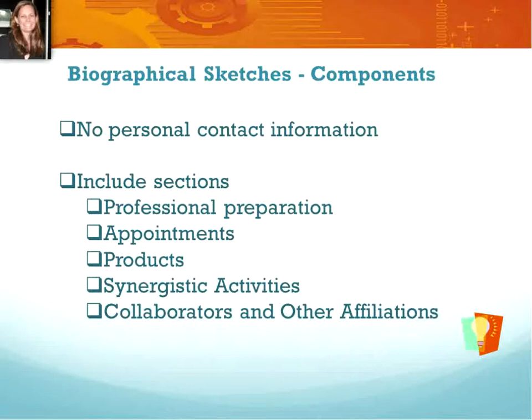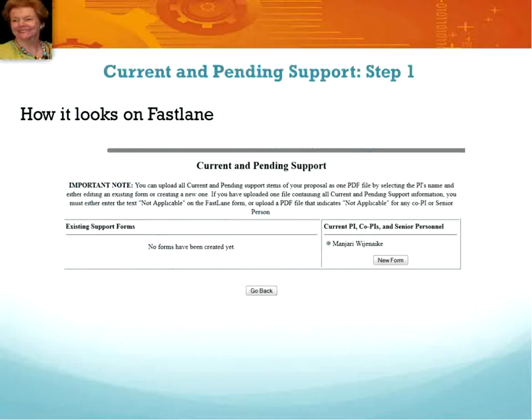Collaborators and other affiliations — this section has three parts, some of which may not apply to you. You would list all persons in alphabetical order, including their organizational affiliations, who are currently or have been collaborating with the individual on a project, article, book, or paper that relates to the scope of work during the 48 months prior to submitting this proposal. Or if you have co-edited a journal or conference proceedings with someone, include that individual within the last 24 months. If applicable, this section also asks that you include information on graduate advisors and or thesis advisors.